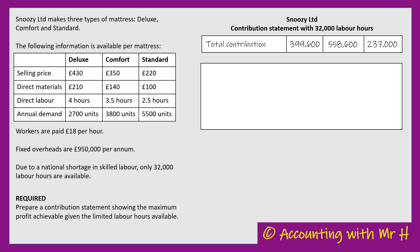I've kept the final row of the table showing total contributions from each mattress. Adding up all of those contributions to get an overall total: £399,600, plus £558,600, plus £237,000. If they manufacture and sell all of the mattresses according to our plan, it will bring in £1,195,200 of contribution.